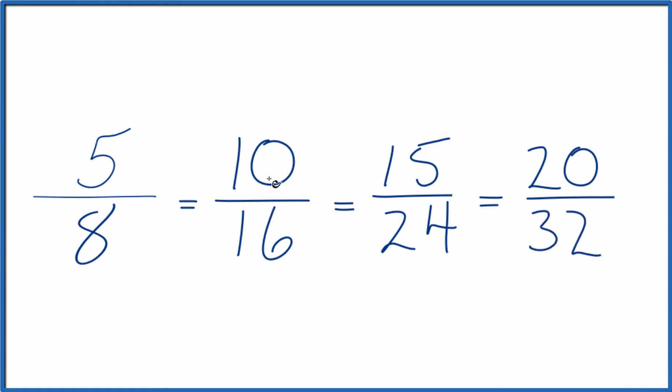5 divided by 8, 10 divided by 16, 15 divided by 24, or 20 divided by 32. They'll all give you the same decimal answer.